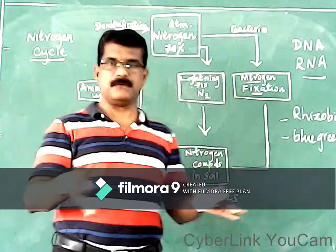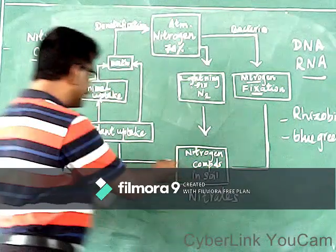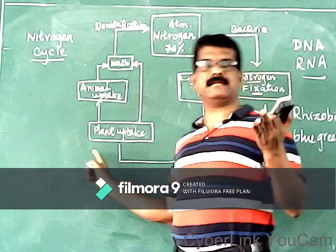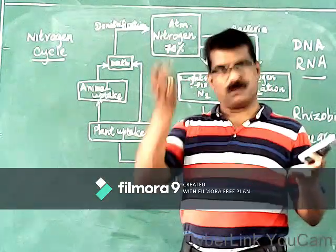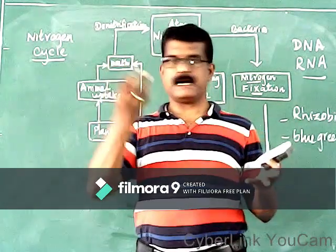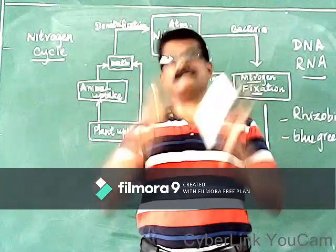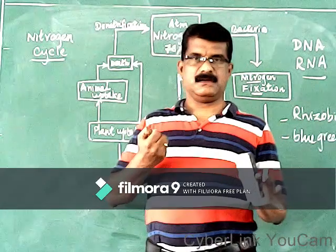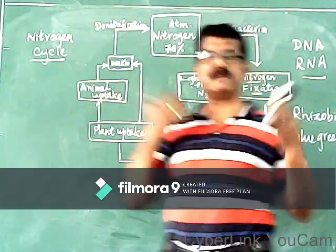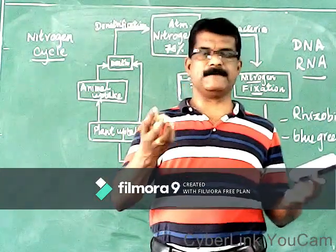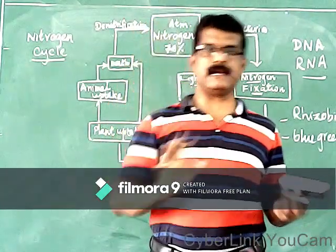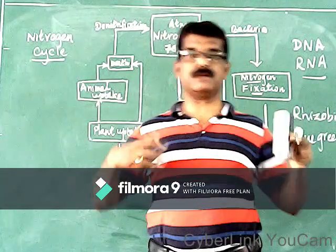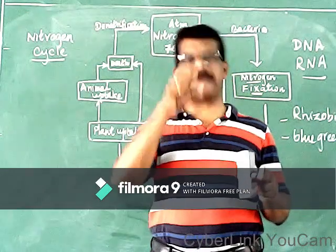Once nitrogen is converted into a usable form, it is available in the soil. From the soil, this nitrogen is absorbed by plants. Plants absorb nitrogen because it is essential for chlorophyll formation, DNA and RNA formation, and protein synthesis. Using this nitrogen, plants produce proteins. When these plants are consumed by animals, the proteins go into the body of animals. We are dependent on plants for our protein — protein-rich foods like groundnut, gram, and pulses are rich in proteins and are called body-building food.